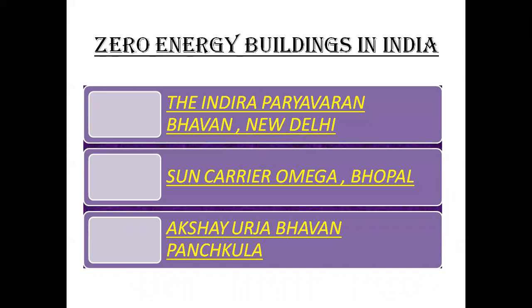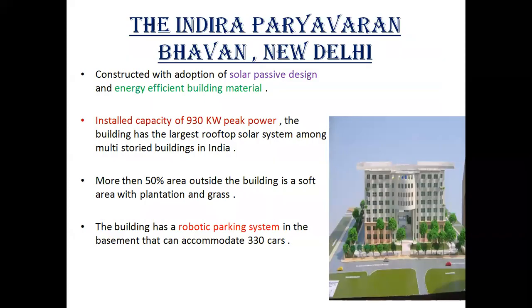Three buildings in India constructed on the zero energy building concept are presented. The first is Indra Paryavaran Bhavan, New Delhi, constructed with adoption of solar passive energy and energy-efficient materials. It has an installed capacity of 930 kilowatt peak power and the largest rooftop solar system among multi-storied buildings in India. More than 50% of the area outside the building is soft landscaping with plantation and grass. The building also has a robotic parking system in the basement that can accommodate 330 cars.